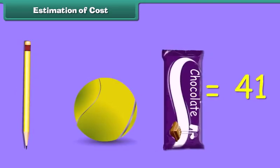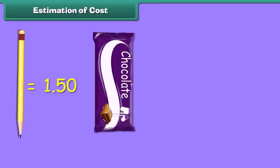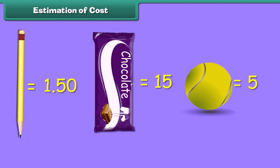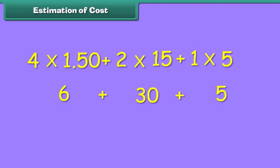Estimation of cost means calculating the total cost of different items. What will be the total cost of four pencils, two chocolates and one tennis ball? The unit cost of a pencil is 1 rupee 50 paisa, unit cost of chocolate is rupees 15, and tennis ball is rupees 5. Total cost equals 4 × 1.50 plus 2 × 15 plus 1 × 5, which amounts to rupees 41. Thus, this is the estimated cost.